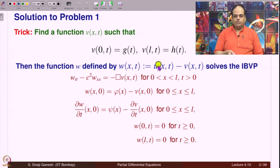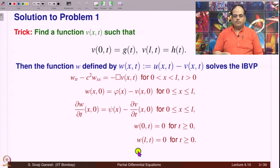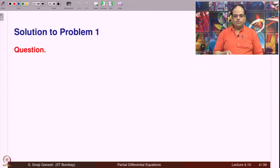The boundary conditions become zero because u should satisfy u(0,t) = g, but v(0,t) is already g, so g − g = 0, giving w(0,t) = 0. Similarly, w(l,t) = u(l,t) − v(l,t). Since u(l,t) is supposed to be h and v(l,t) = h by construction, the difference is 0, so w(l,t) = 0.